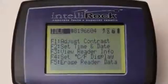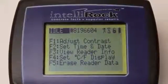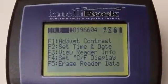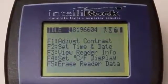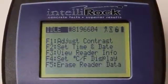When a logger is not attached, the reader's main menu will allow you to adjust the display's contrast, set the time and date, select Celsius or Fahrenheit display modes, and erase any logger information that has been downloaded to the reader.